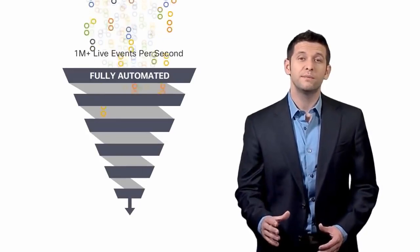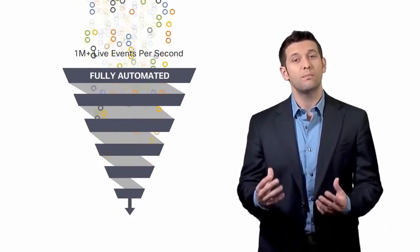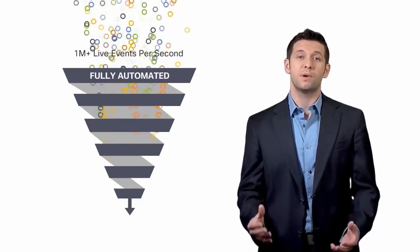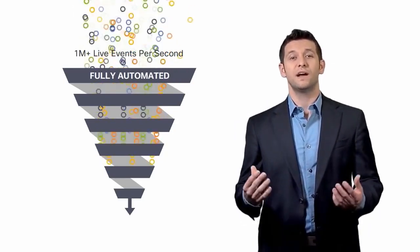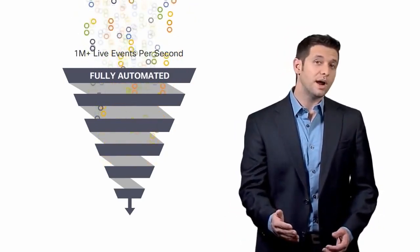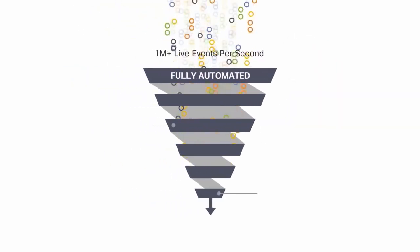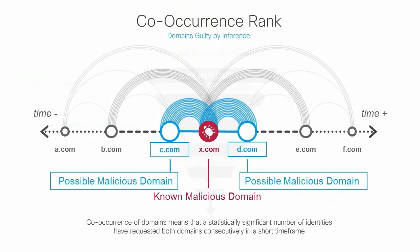We ingest all of that information in real-time into our massive graph database, and then continuously run statistical models against it. This information is constantly analyzed by our research and response team as well, and using this combination of human intelligence and machine learning, we identify malicious sites, whether it's domains, URLs, IPs, or autonomous systems, all across the internet. A few examples include the Co-Occurrence Model, which identifies domains queried right before or after a given domain, helping to uncover domains linked to the same attack even if they're hosted on separate networks.